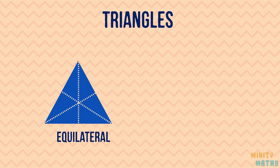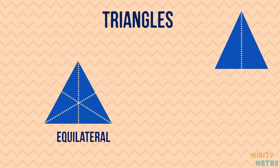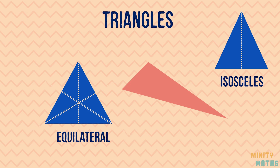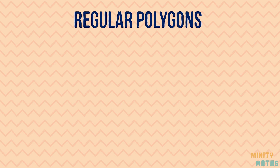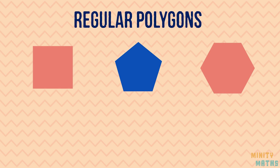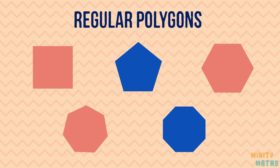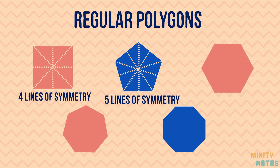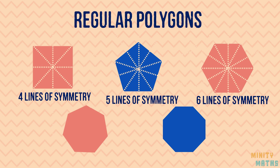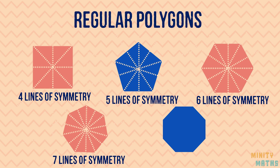Let's look at these triangles. Have a look at these regular polygons where all sides are equal and all angles are equal. Do you notice a pattern here? A regular polygon will have the same number of lines of symmetry as the number of sides.